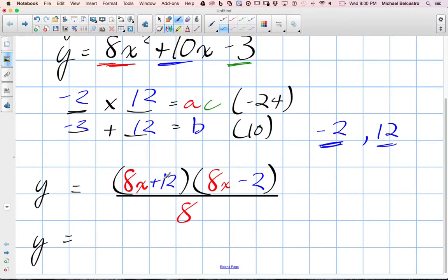So 8 and 12. Can you think of a number that divides into both of them evenly? 4. We can take 4 out. So if I were to take 4 out of here, what would this become? 8 divided by 4, we get 2x. And 4 divided by 12 is 3. Perfect. So we've now common factored 4 out of there.